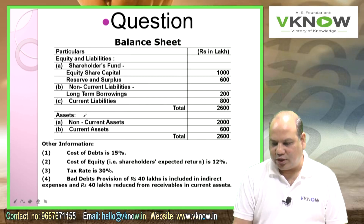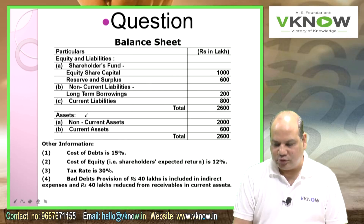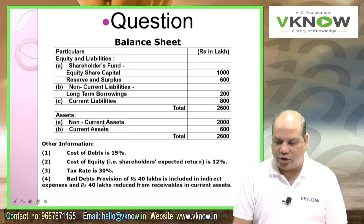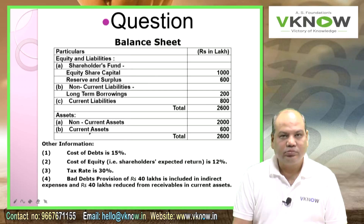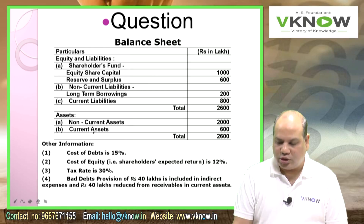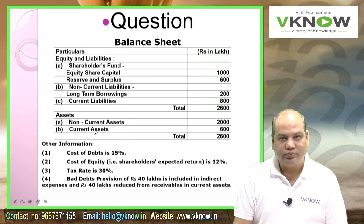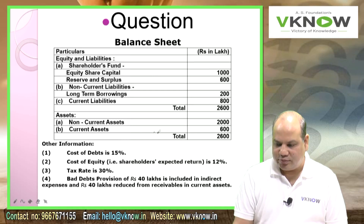Under assets: non-current assets are 2000 and current assets are 600, giving a total of 2600.